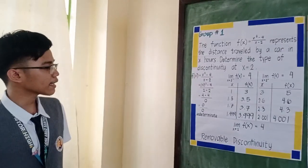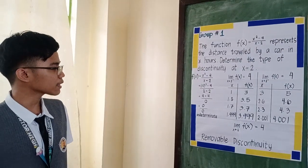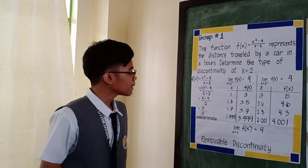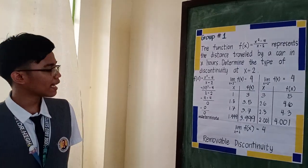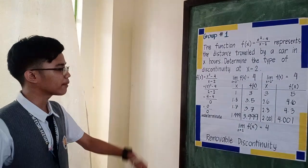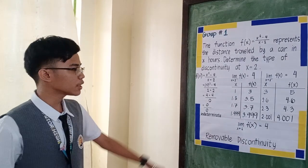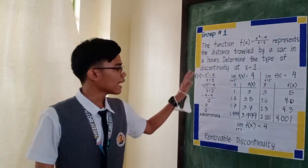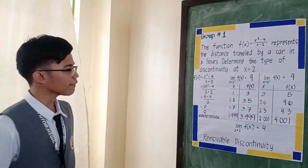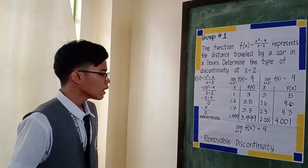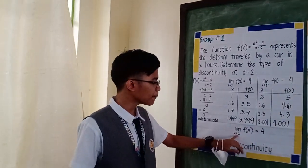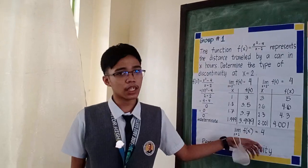We also get the limit of the function as x approaches 2 from the left and from the right. As you can see, the limit of f of x as x approaches 2 from the left and from the right is equal to 4, which means the limit of f of x as x approaches 2 is equal to 4.